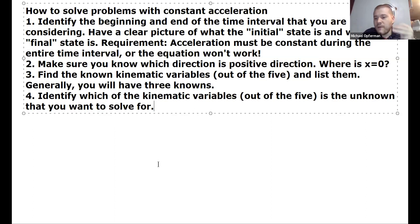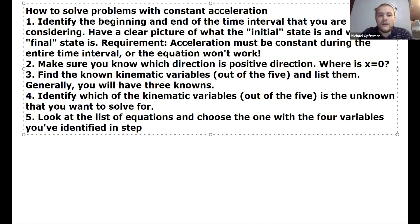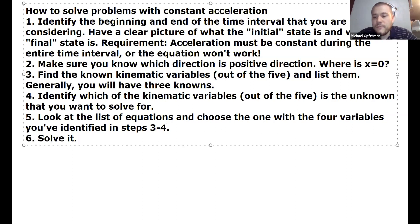Okay. So now you've identified three knowns and one unknown. Now it's obvious how to do it. Now you look at your list of kinematic variables. Look at the list of equations and choose the one with the four variables you've identified in steps three to four. So you basically now have a list in front of you on your paper which says, these three are known. This is the one I want to solve for. That gives you a total of four. I mentioned in the previous video, each of the kinematic equations has four variables in it. So you'll choose whichever equation has those four variables in it. And then you just simply solve it. So that's just doing algebra.